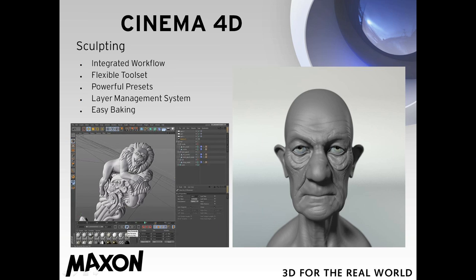The integrated workflow is definitely a huge advantage to having sculpting tools inside of Cinema — you can sculpt something, take a model that you have and sculpt on it, and add detail to any model. There are a series of nice presets including heads and other object types to get you started. The layer management system is great, and you can bake out everything including textures, displacement maps, and ambient occlusion into a separate object while still saving off your raw sculpted object.